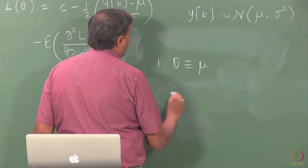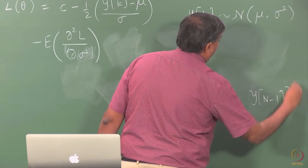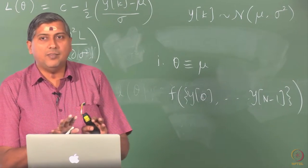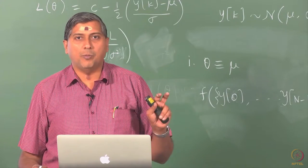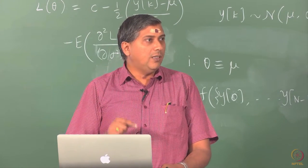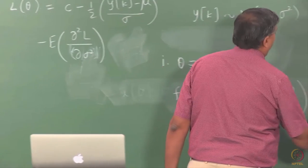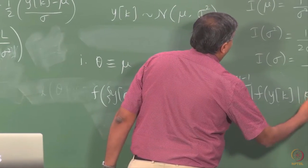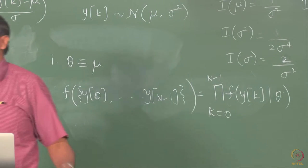The first step is to construct the joint pdf of y(0) to y(n−1). This can be an intimidating task in general, but this example is nice because the observations are uncorrelated and fall out of a Gaussian process. We know from the property of Gaussian processes that a Gaussian white noise process is also IID. Therefore, the joint pdf of n observations is simply the product of the marginal pdfs: the product from k=0 to n−1 of f(yₖ; θ). That is the big advantage of working with a white noise process.